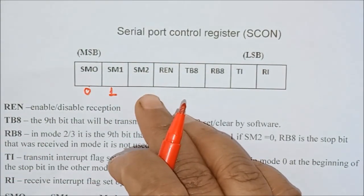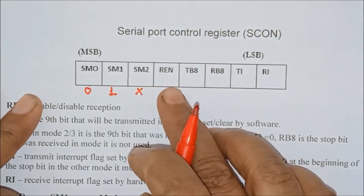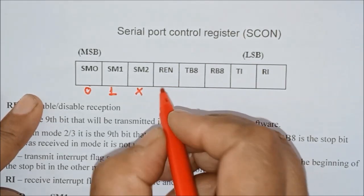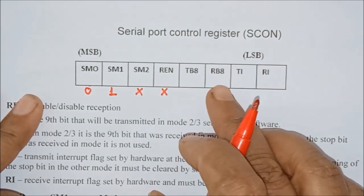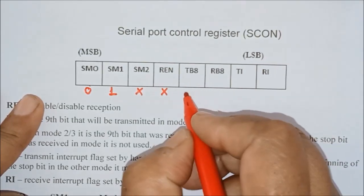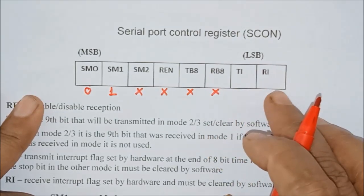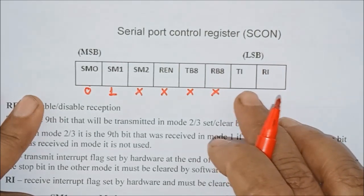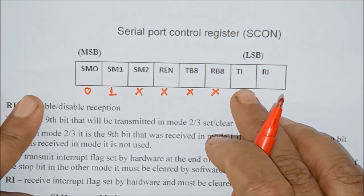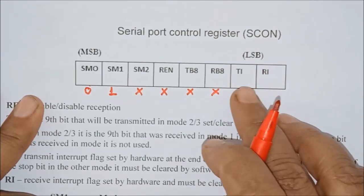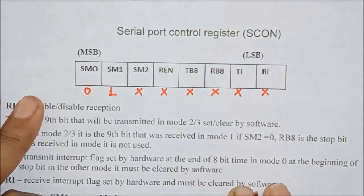The SM2 bit is used for mode 2 and 3 of serial transmission, so for mode 1 it is in don't care condition. REN is the receiver enable terminal; since we are writing a transmitter program, this bit is also in don't care condition. TB8 acts as the 8th bit of transmission and RB8 as the 8th bit of reception, but these 2 bits are used in mode 2 and 3, so for mode 1 they are in don't care condition. TI is the transmitter interrupt and RI is the receiver interrupt; the controller automatically sets these bits to 1, so for initialization of SCON these bits are also in don't care condition.